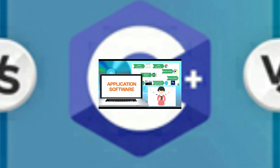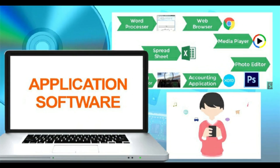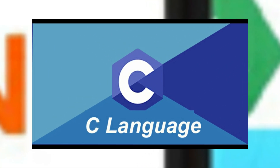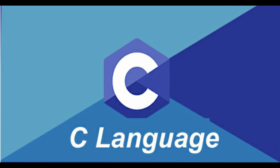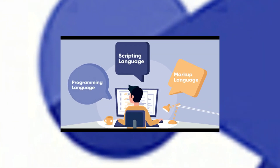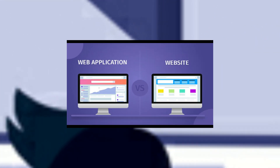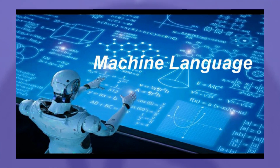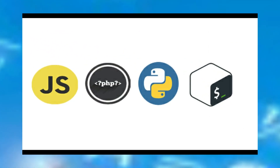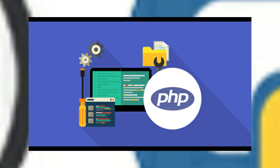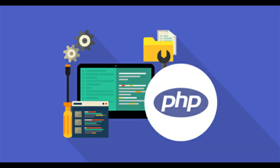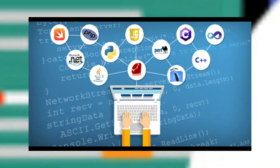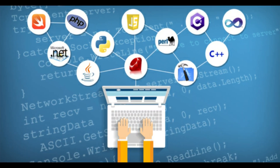With programming languages, whatever software you make, you use one particular language to create that application — for example, software written completely in C is based on C language only. Scripting languages, on the other hand, are used to create web applications or similar software. They use an interpreter to convert high level language into machine language. Examples include JavaScript, PHP, and Python. With scripting languages, if you have made software in PHP, it is possible to also use HTML or Java — meaning we can use scripting language alongside multiple programming languages.